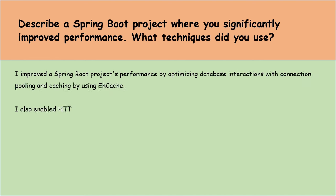How do you mock microservices during testing? To mock microservices during testing, I use tools like WireMock or Mockito to pretend I'm talking to real services. With these tools, I set up fake responses to requests — so if my app asks for something from another service, the tool steps in and gives back what I told it to, just like if the real service had answered. This method is great for testing how our app works with other services without needing those services to actually be running, making our tests quicker and more reliable.